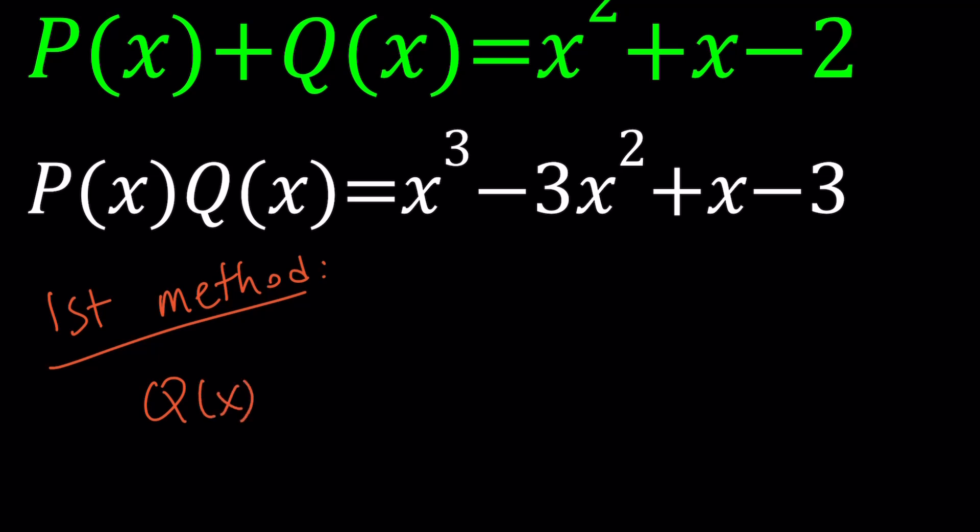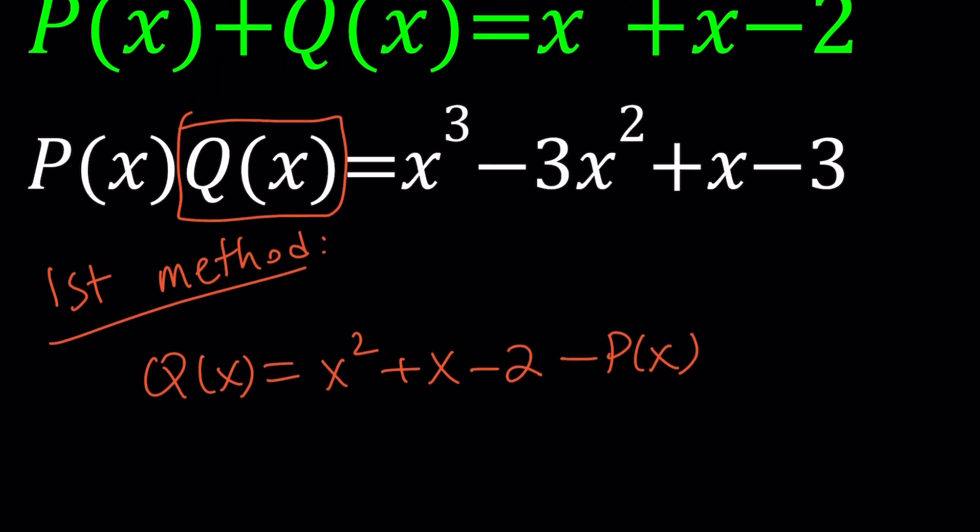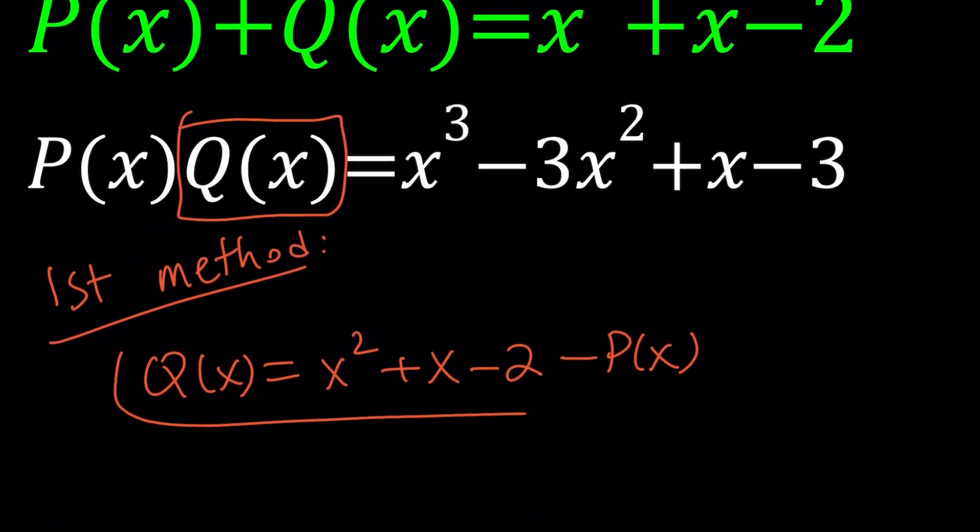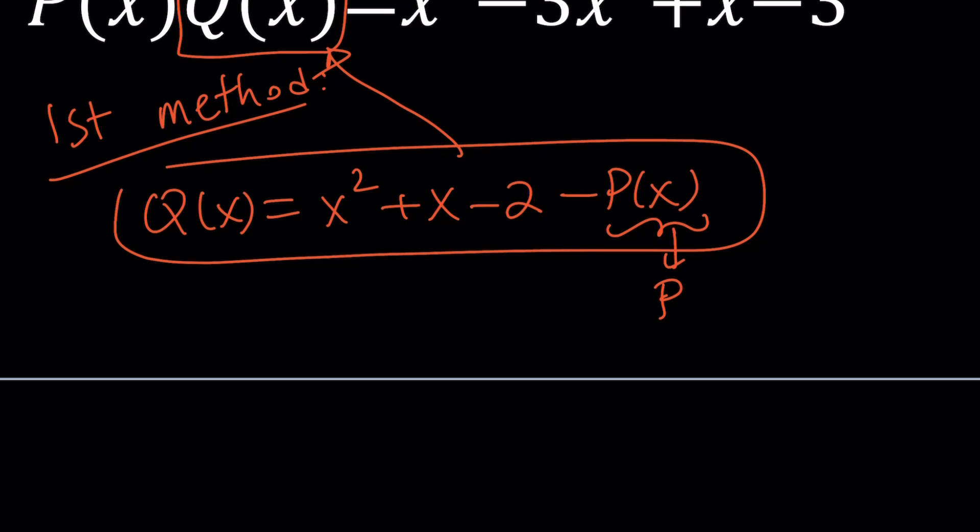I'm going to subtract P(x) from this and then substitute it into the second equation, because notice that I have Q(x) in my second equation which can be replaced with this. Make sense? Let's go ahead and do that. But while we're doing this, let's also replace P(x) with P to simplify things a little bit, because P is going to repeat a few times and I don't want to write P(x) every time.